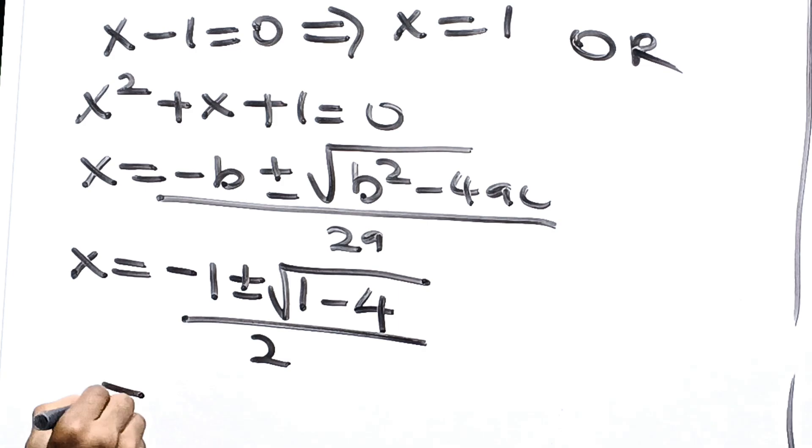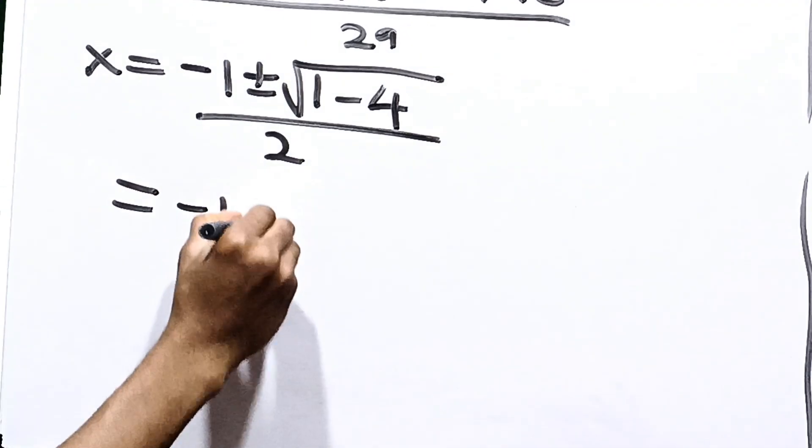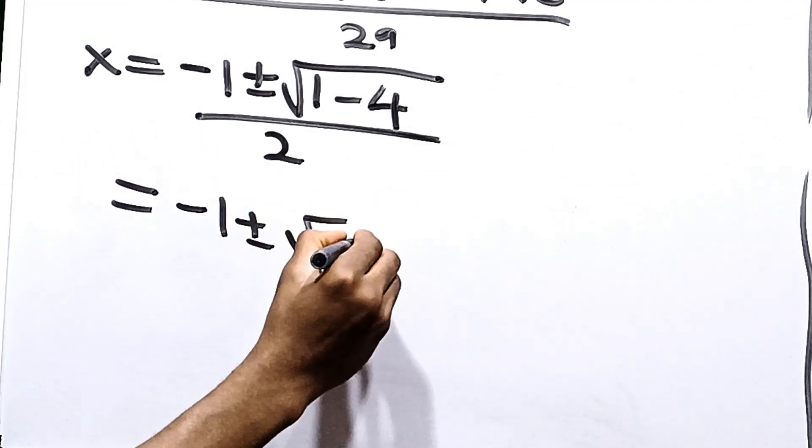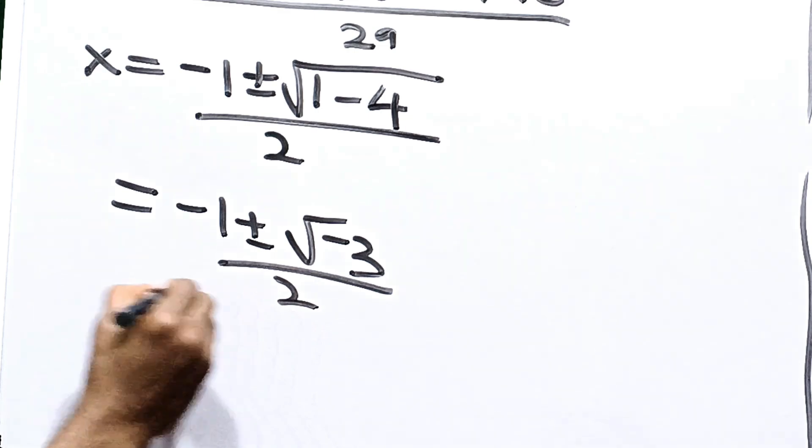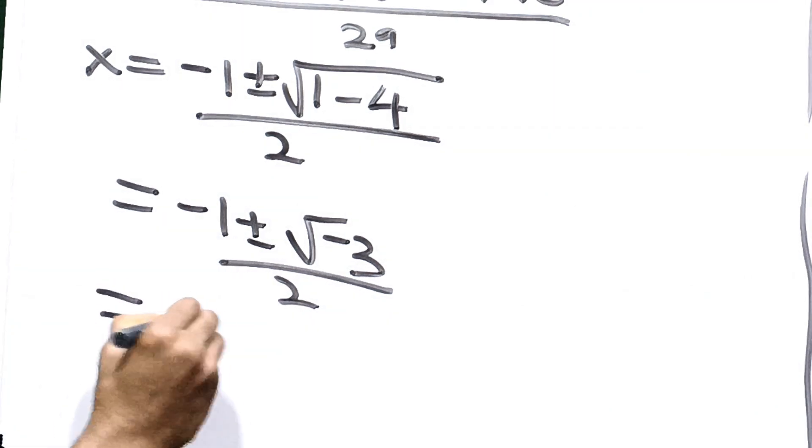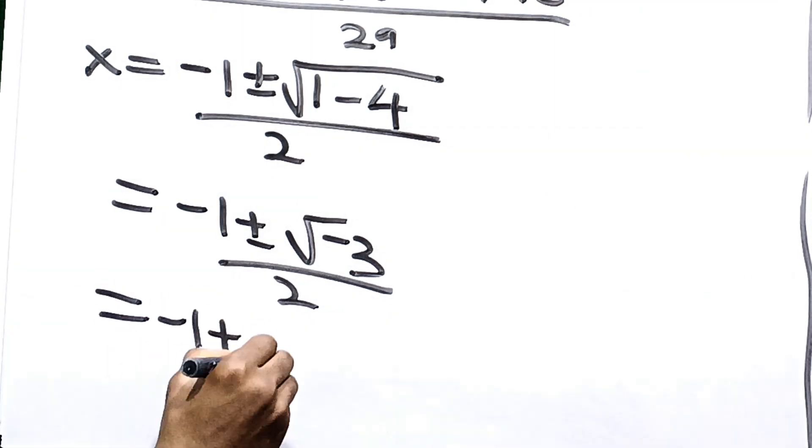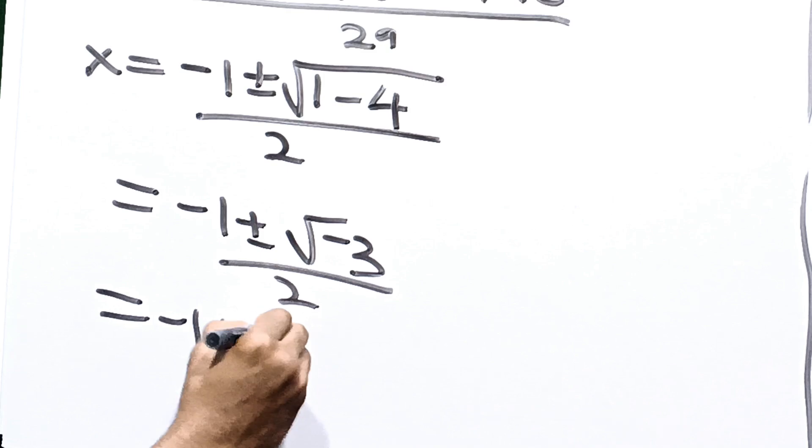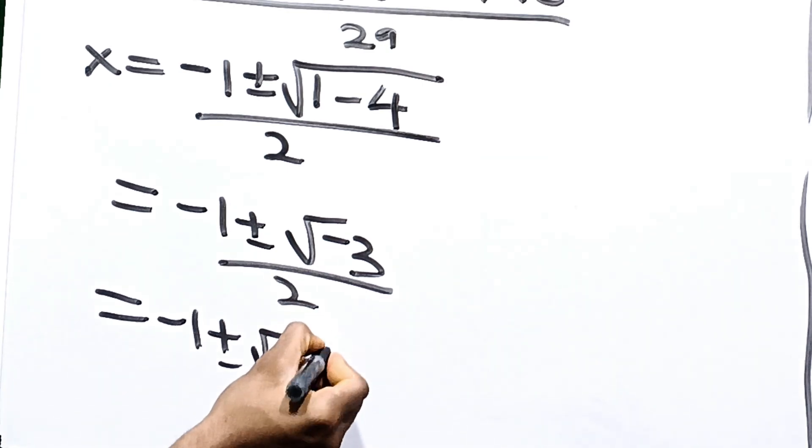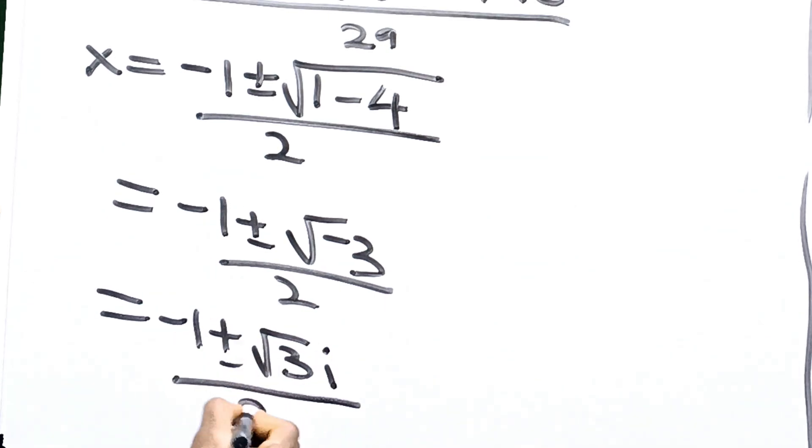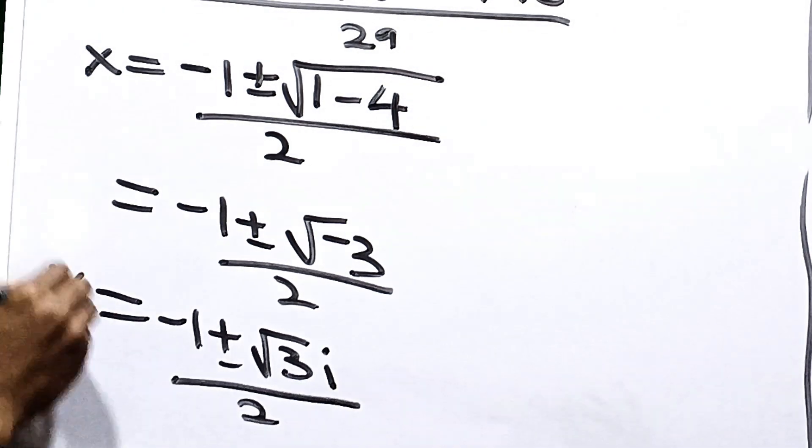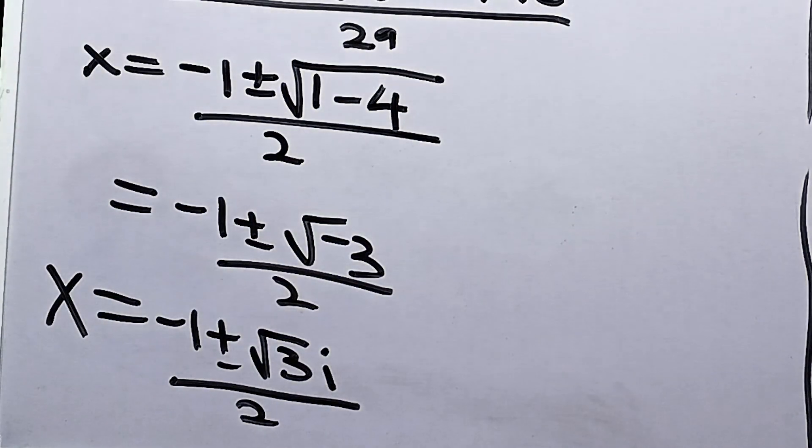And this is equal to minus 1 plus or minus root of negative 3 all over 2, which becomes equal to minus 1 plus or minus root 3 times i, all over 2. So these are the four answers for x in this equation.